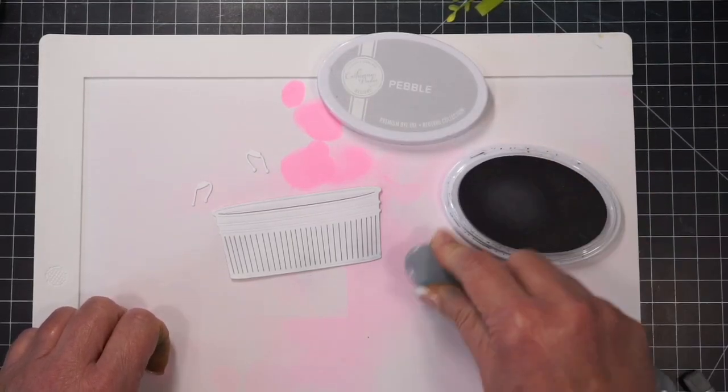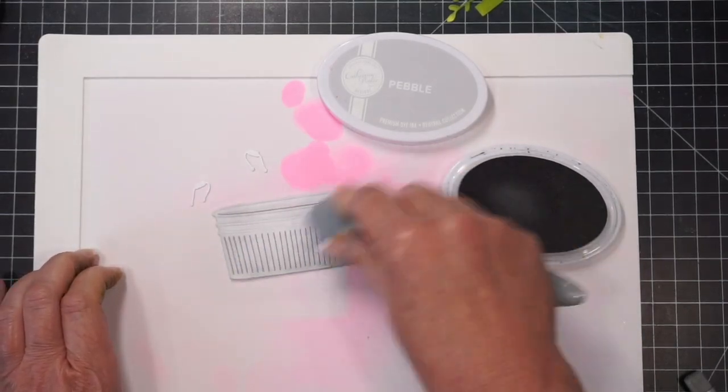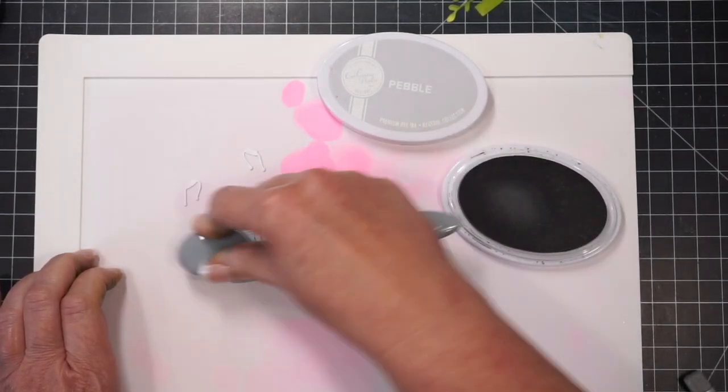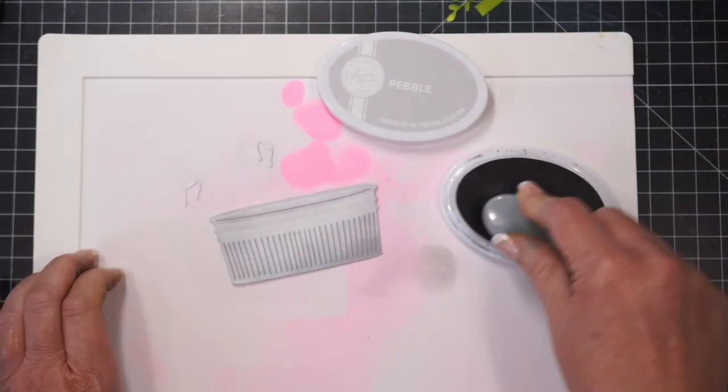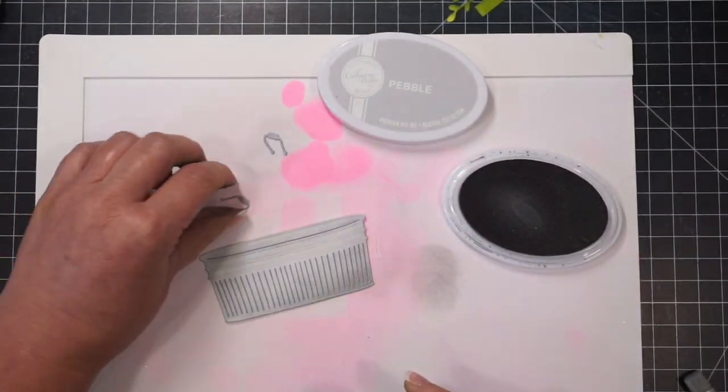Now, you can see I've moved on to the tub. I start with a gray color. Blend it around. There's no rhyme, no reason to this. Make sure you don't forget the handles.